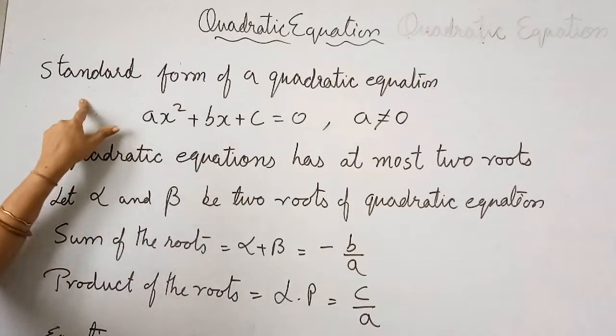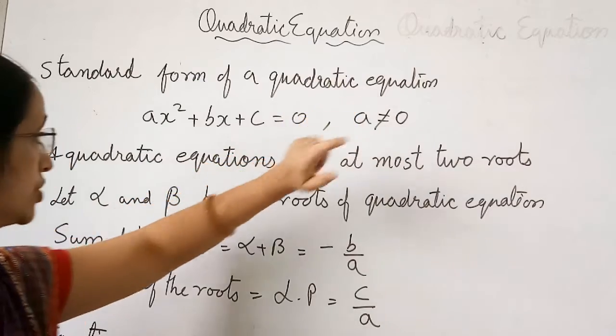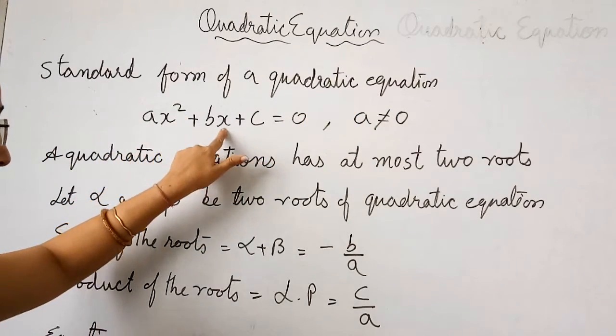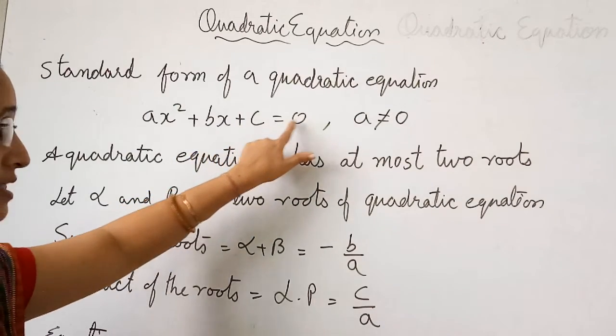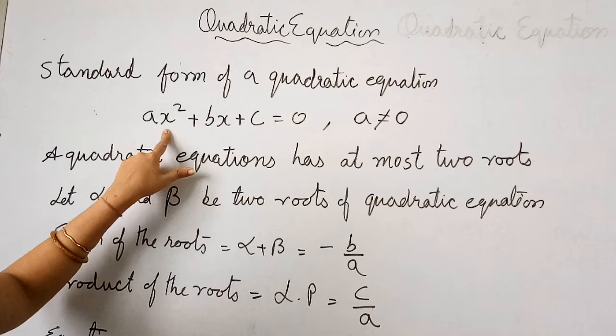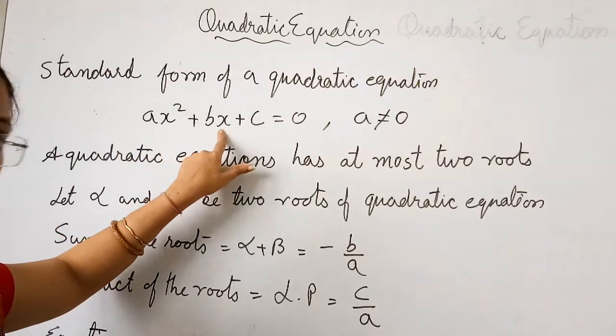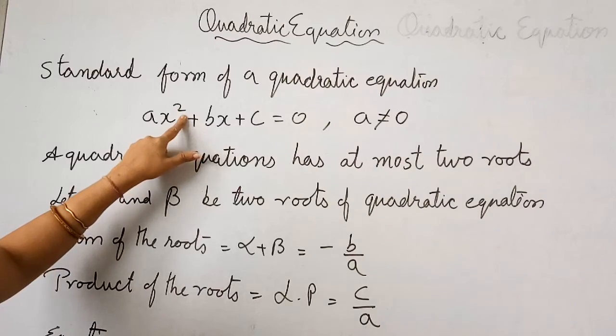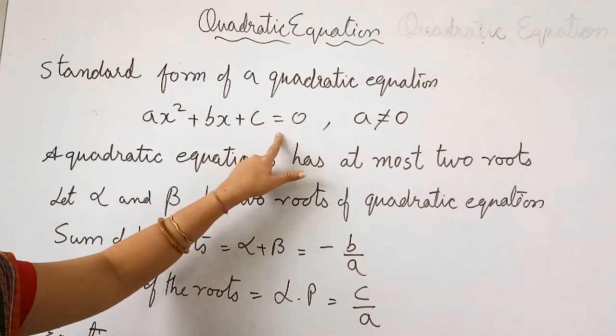The standard form of quadratic equation is ax² + bx + c = 0. This is a single variable equation, having only one variable with the highest power or degree of 2. So we call it a quadratic equation.